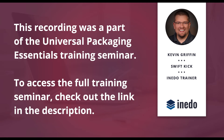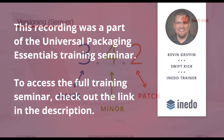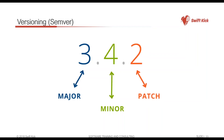Most package managers rely on what's called semver, or semantic versioning. Semver can have three or potentially even four numbers, but in most cases you're dealing with three numbers. For example, 3.4.2. Number three is the major version, four is the minor version, and two is the patch version.